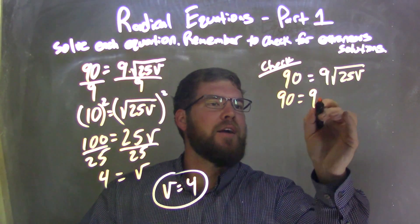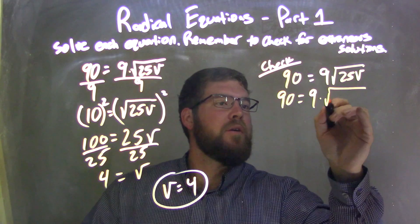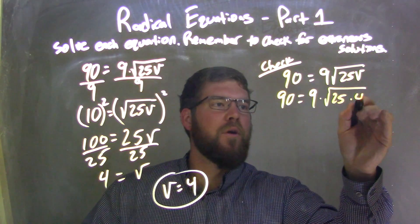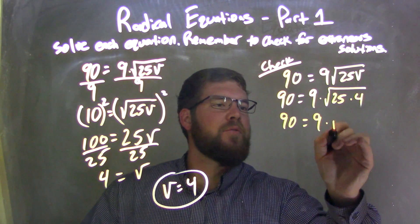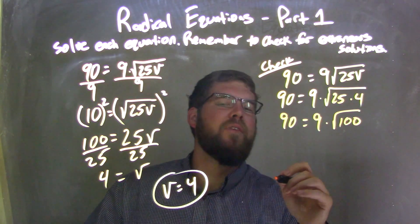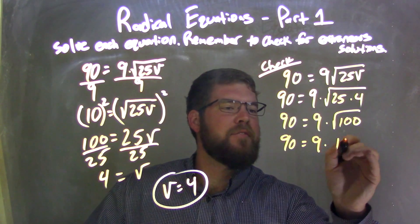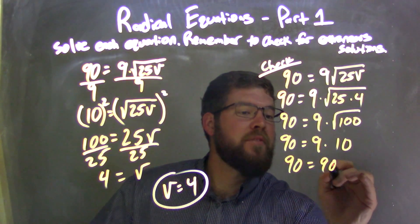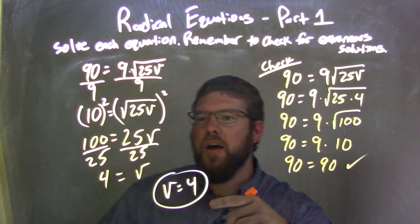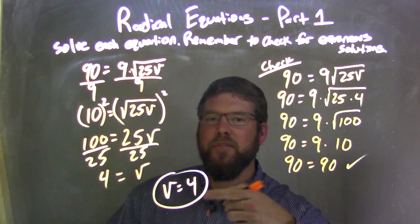I have 90 equals 9 times the square root of 25 times 4. 25 times 4 is 100. So we have 90 equals 9 times square root of 100. Square root of 100 is 10. 90 equals 9 times 10, which is 90. Left and right are equal. Check. It works. So V equals 4 is my final answer.